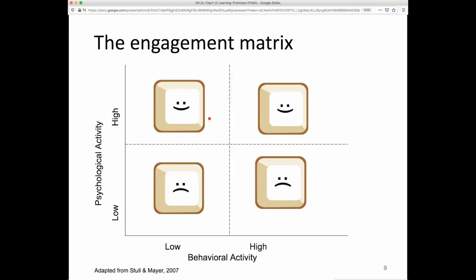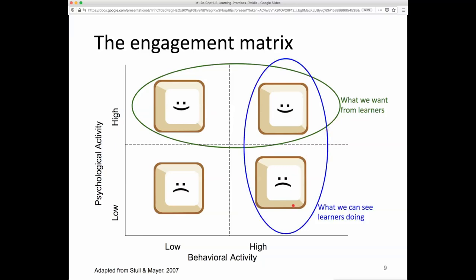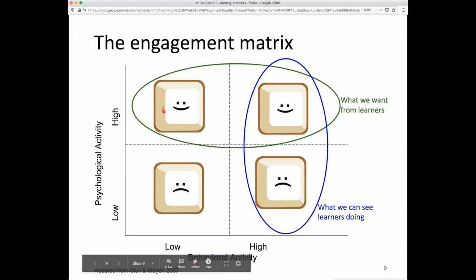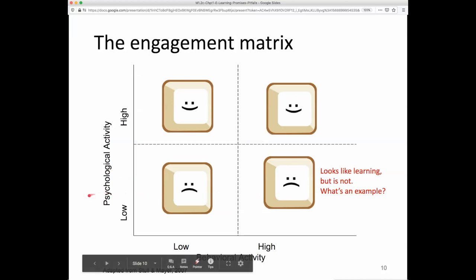Just because behavior is high doesn't mean students are thinking in a way that leads to learning. In the engagement matrix from the book, we want learners to have high psychological activity that will enhance learning. However, what we observe is their behavior, and sometimes we can mistake what looks like learning for what isn't, or mistake apparent disengagement for actual learning.